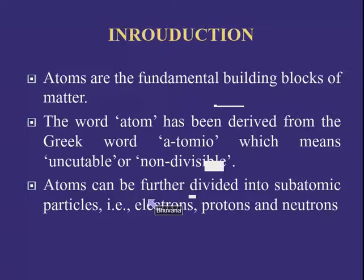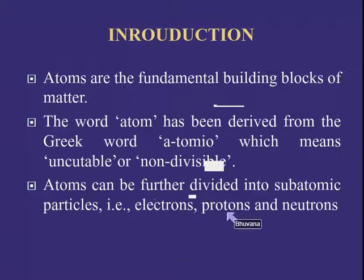Subatomic particles means electrons, protons, and neutrons. In the 20th century, scientists proposed that the atom can be further divided into subatomic particles like protons, electrons, and neutrons.